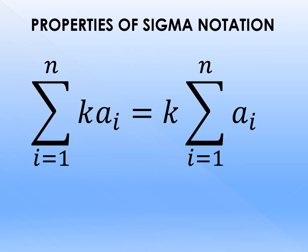There are also properties of sigma notation. The first property is: if we have summation of k times a sub i, where i starts from 1 up to n, it can be written as k times summation of a sub i, where i starts from 1 up to n. The k is what we call the numerical coefficient or the constant term — we factor it out and place it outside the sigma notation.